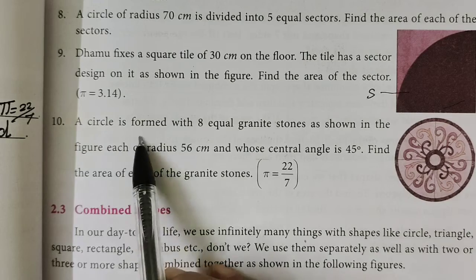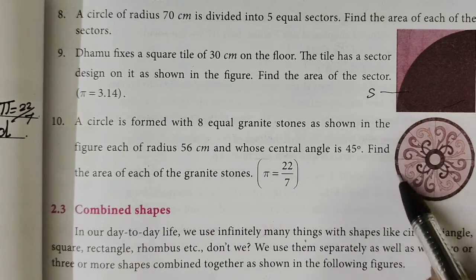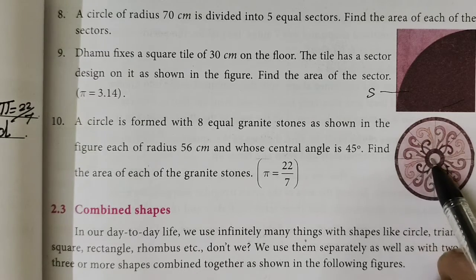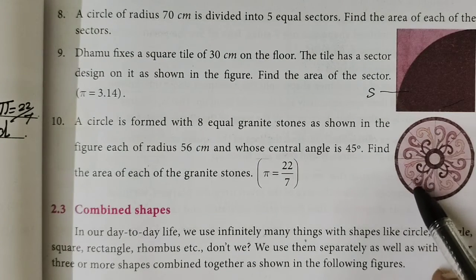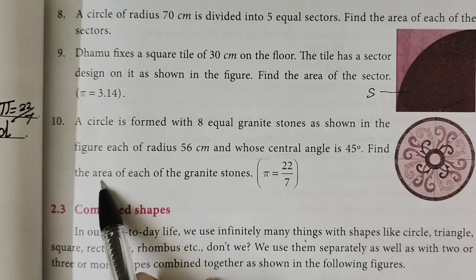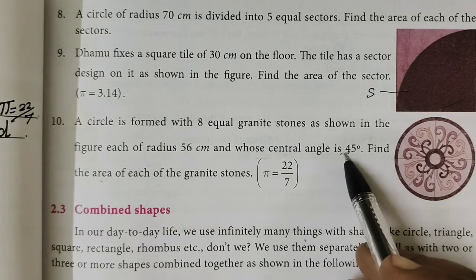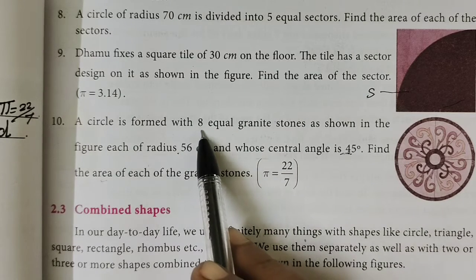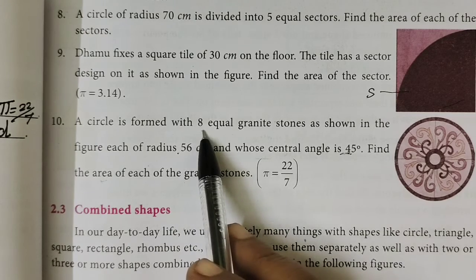The circle is formed with 8 equal granite stones. This is a round shape fixed in the hall. The pieces are joined — this is a square tile. The square tile is divided into 8 equal parts, so each part has an angle of 45 degrees. The radius is 56cm.